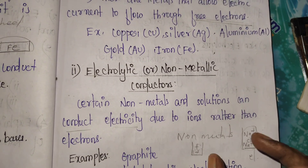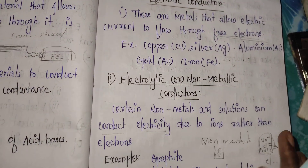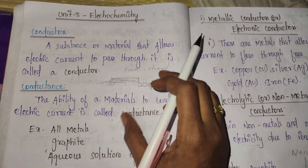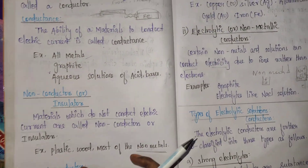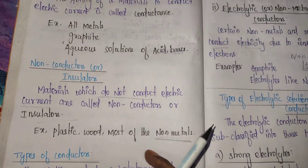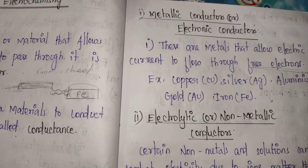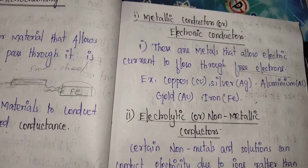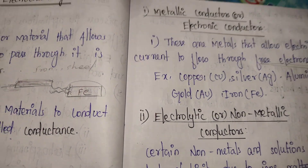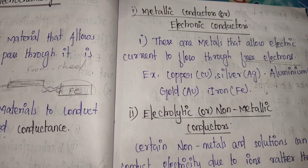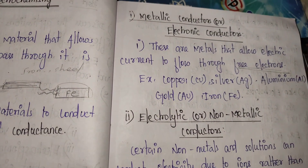This is called electrolytic conductors. So this video covers conductors, insulators, and types of conductors — this is the 2 marks section. If you like this video, please like and subscribe. If you have any doubts, please comment in the comment section. I will reply to all comments. Thank you. Have a nice day.